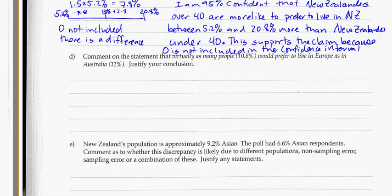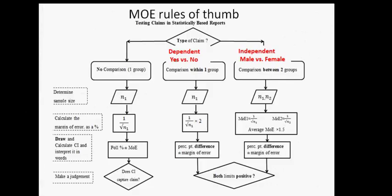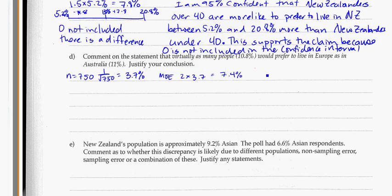Let's calculate this. Our sample size is 750, and 1 over the square root of 750 equals roughly 3.7%. For a dependent comparison, the MOE rule we're going to use is 2 times 3.7, which gives us 7.4%. These are dependent choices — going between Australia and Europe — so we need twice the margin of error. The percentage difference between the two is 11 minus 10.8, which is just 0.2%.